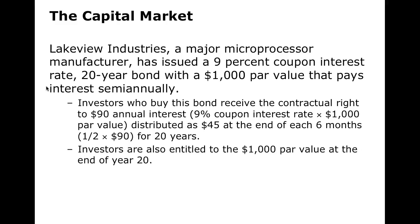Say we have Lakeview Industries, a major microprocessor manufacturer. They issue a 9% coupon — meaning they pay 9% interest per year — on a 20-year bond with a $1,000 par value. As an investor, you receive the contractual right to get $90 annual interest distributed twice a year, so $45 every six months over 20 years. At the end of 20 years, you get your $1,000 back — though that $1,000 isn't worth as much 20 years from now as it is today, and that's what the interest rate is supposed to compensate for.